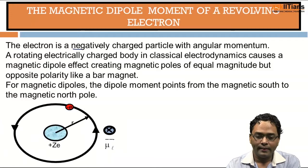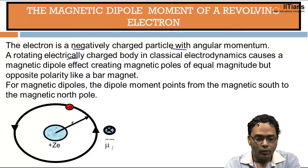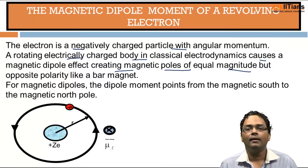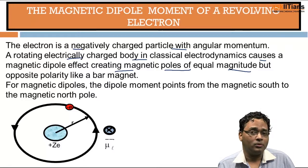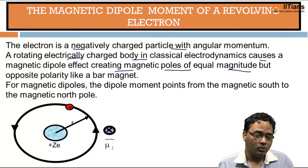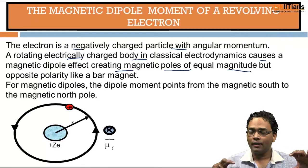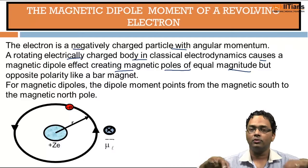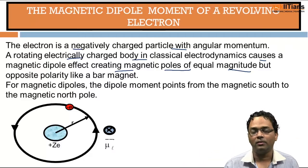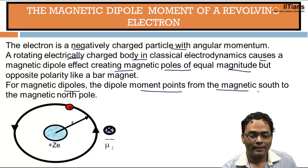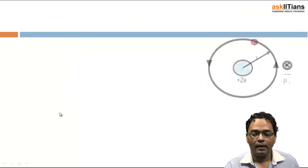An electron is a negatively charged particle with angular momentum — from Bohr's postulate. A rotating electrically charged body causes a magnetic dipole moment, creating magnetic poles of equal magnitude. This is why magnetic monopoles do not exist: unlike electric monopoles — a single positive or negative charge — you cannot have a standalone north pole or a standalone south pole; they always exist in combination.